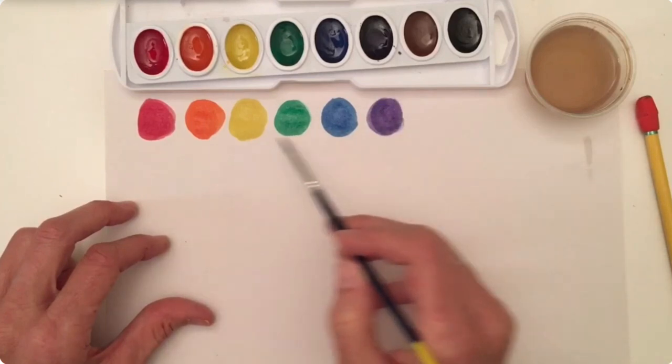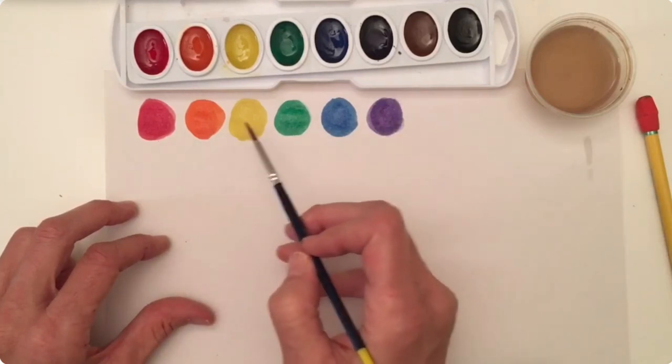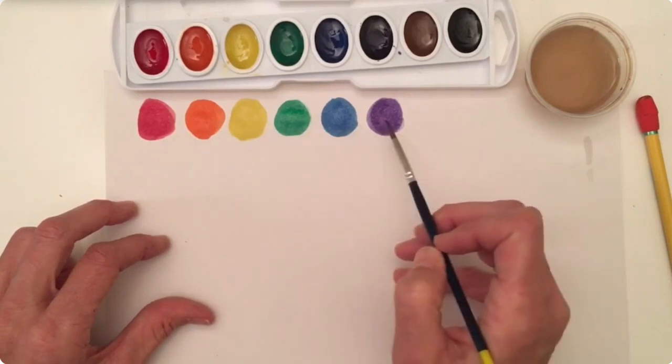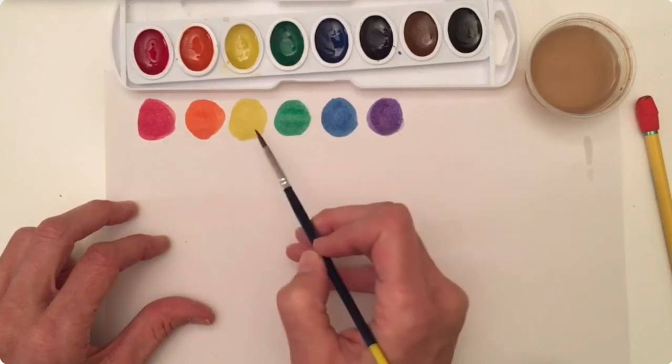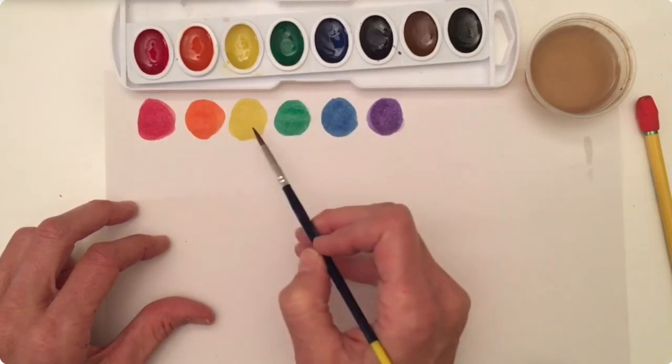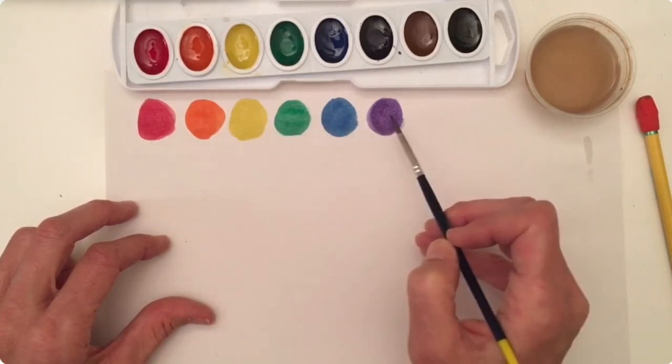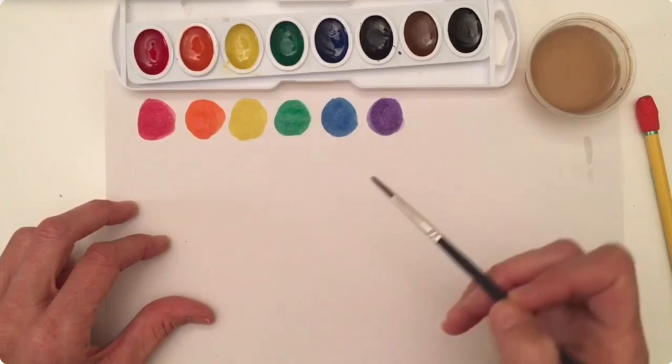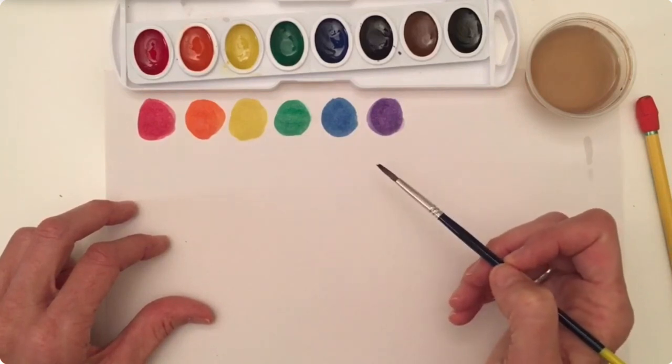Hey, look, we have the rainbow. Red, orange, yellow, green, blue, purple. These are the colors of the rainbow.